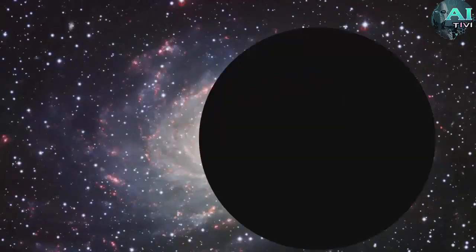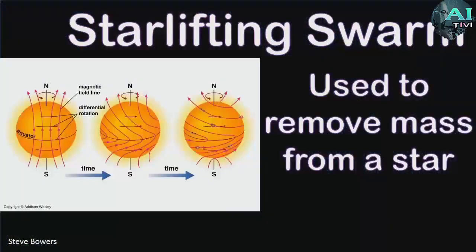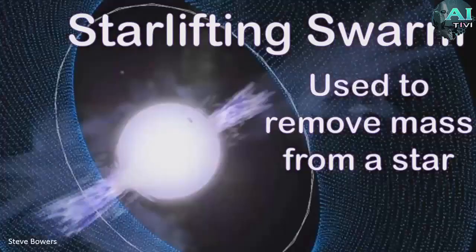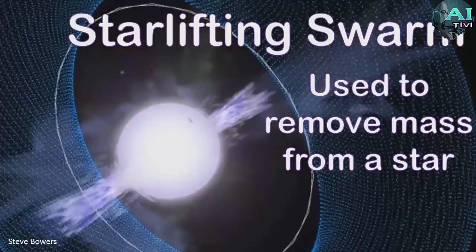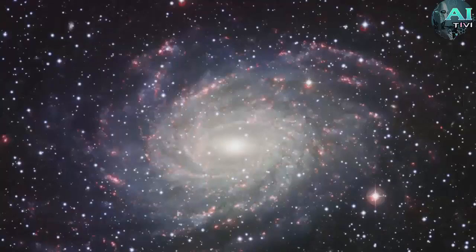They might not build a Dyson Sphere around a star but they will apply star lifting technology to rip the matter off the surface of those stars and store them as gas giants or brown dwarves as hundreds of thousands of those objects per star where they can sit around and be used later on for whatever purposes they need as fuel for other stars for instance. And they might still build Dyson Spheres too just to use that energy to fuel various efforts.